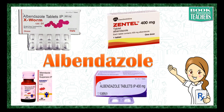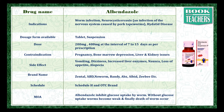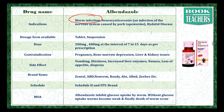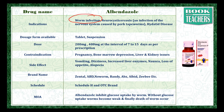Hello students. As a daily drug concept, we are going to see about a drug called albendazole. This drug belongs to the category called anthelmintics. Albendazole is mainly used in worm infections. The parasites which are present on the human body are called worms. Albendazole is specifically used as a first line treatment for worm infections.